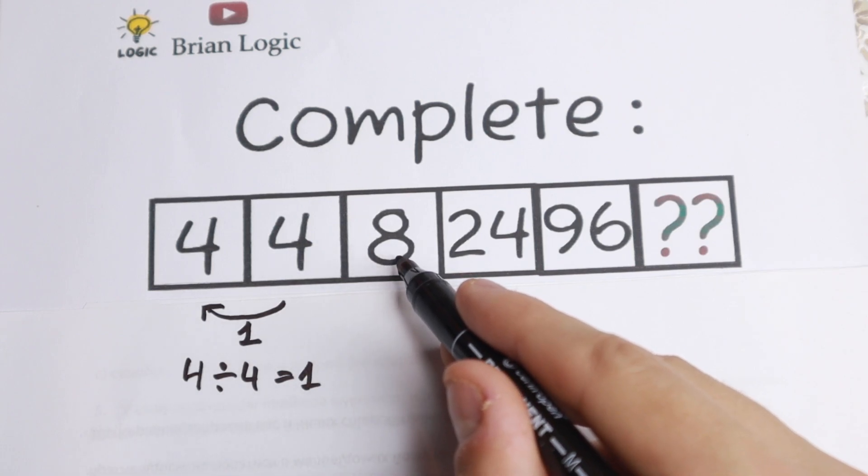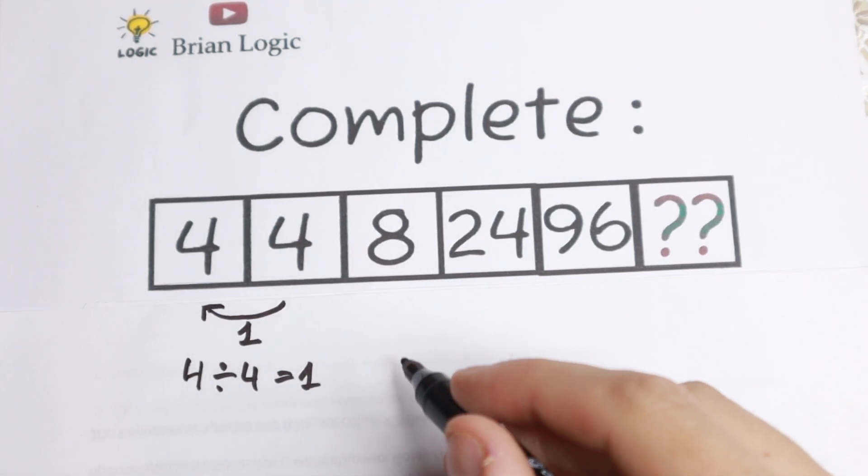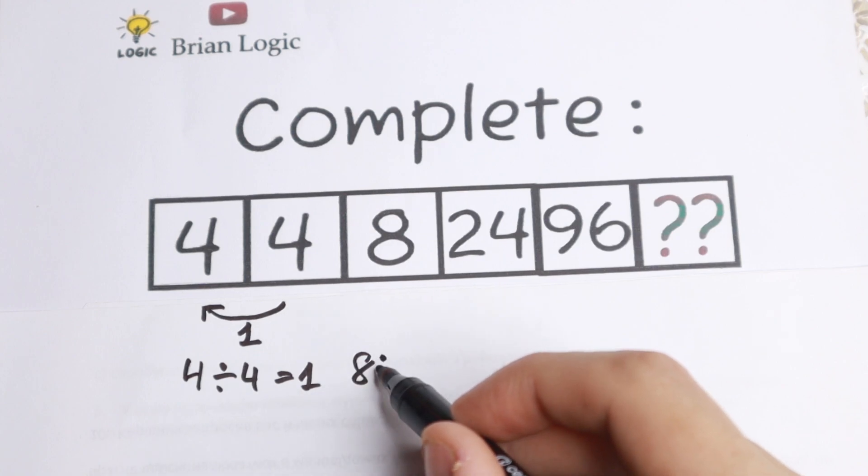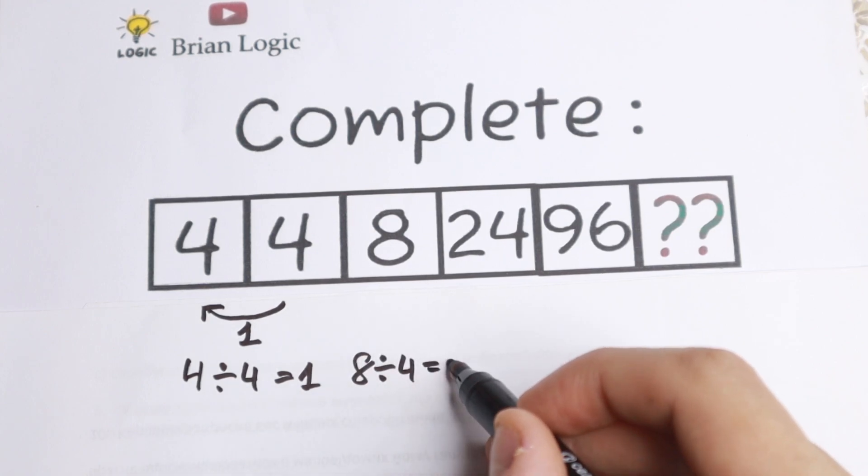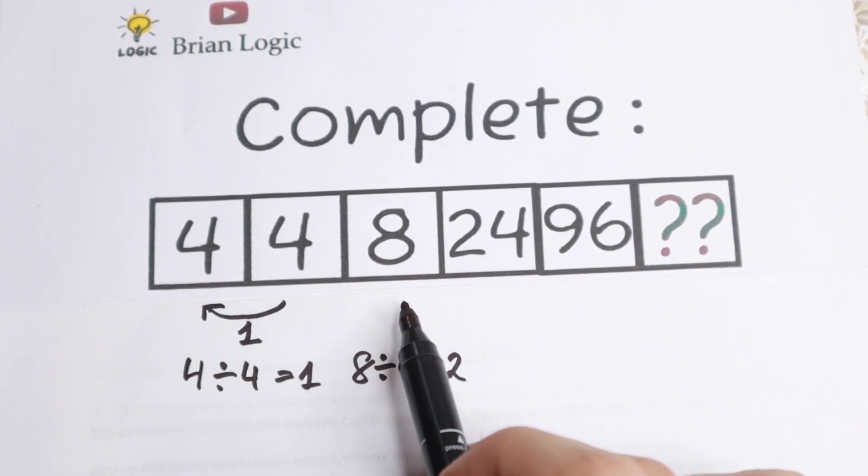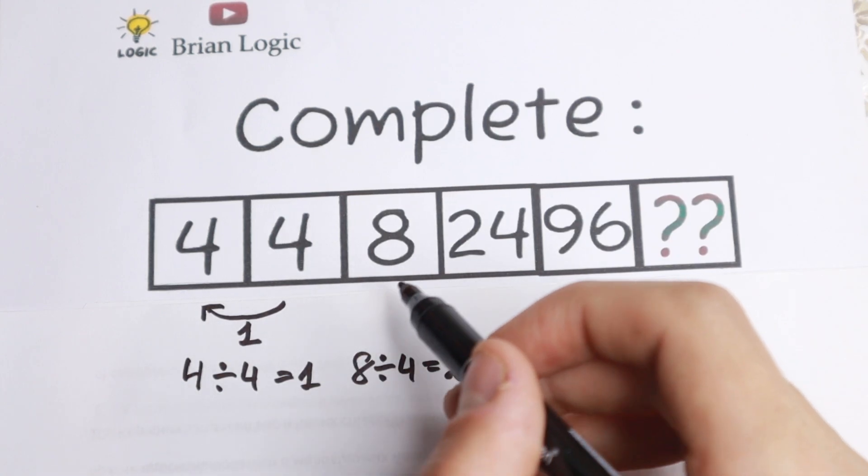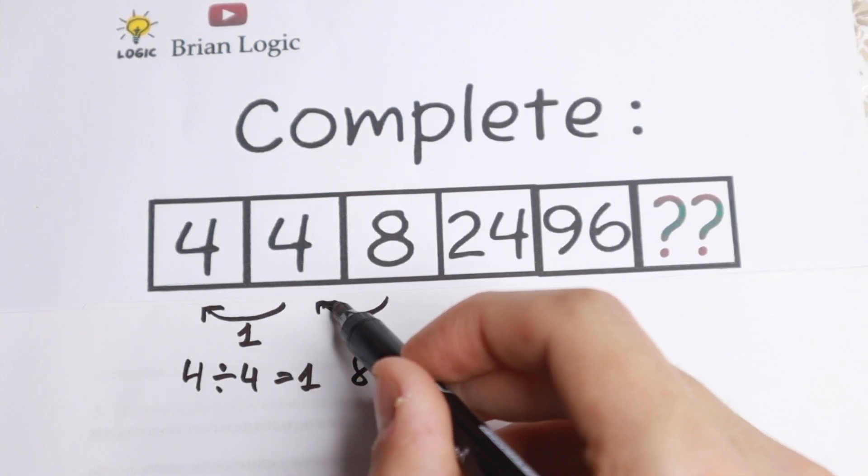Take a look next, if we divide the third one by the second one, so eight divided by four, we will have eight over four, we will have two. So if we divide the third number by the second one, we will have two.